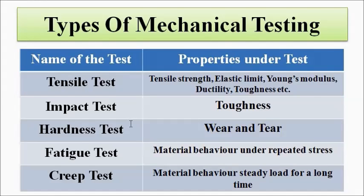The first test is the tensile test, which is used to test tensile strength, elastic limit, Young's modulus, ductility, toughness, etc. Then we have the impact test, which is used to test toughness. Then the hardness test, which is used to test wear and tear resistance and abrasion resistance. Then the fatigue test, which is used to analyze material behavior under repeated stress. And the creep test, which is used to test material behavior under stress for a prolonged period of time.